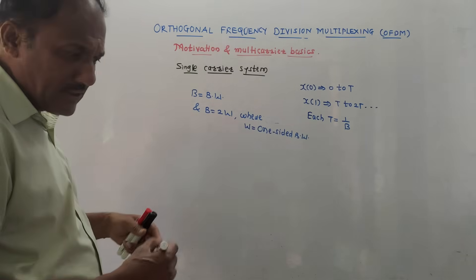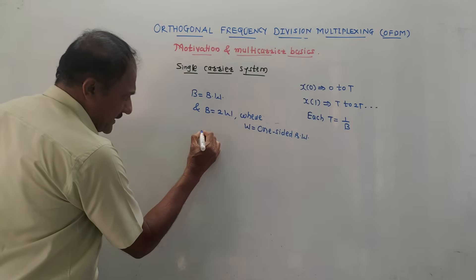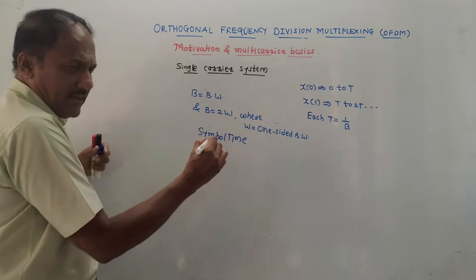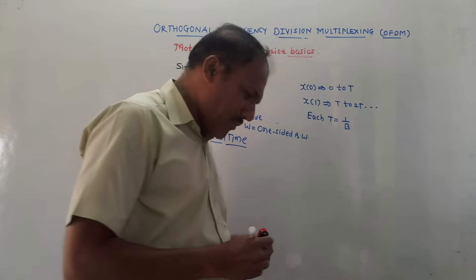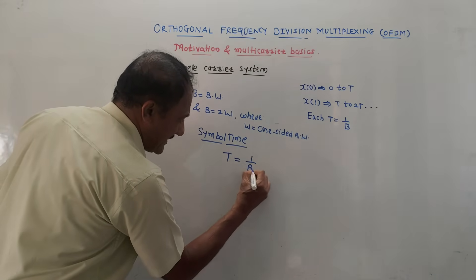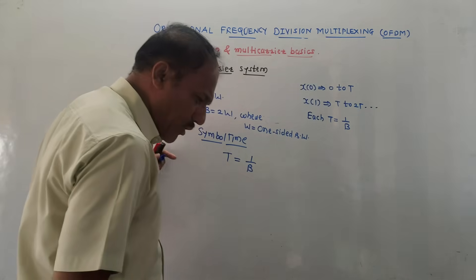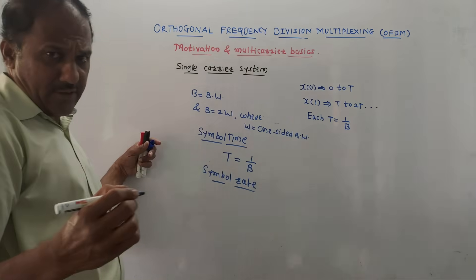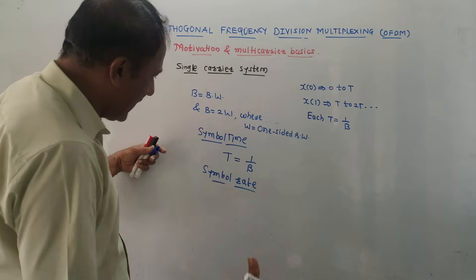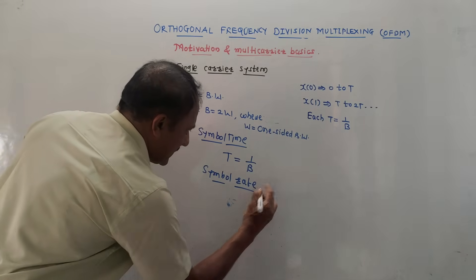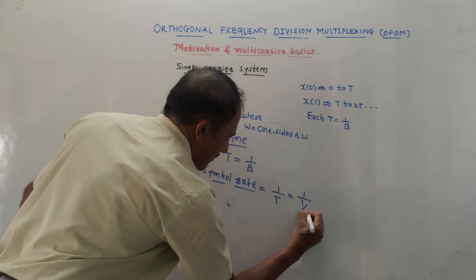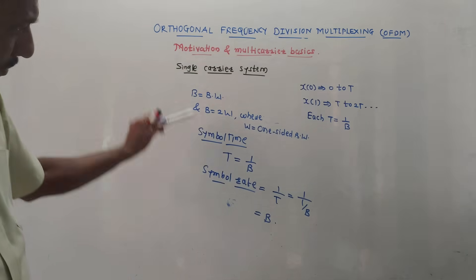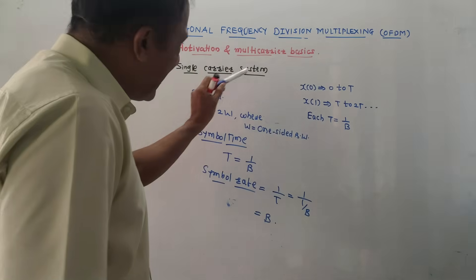Every symbol is transmitted for the entire bandwidth, so a large amount of bandwidth is required because each symbol occupies the full bandwidth. The symbol time t is 1/B, since for the entire bandwidth one symbol is transmitted. Symbol rate is 1/t, which equals 1/(1/B), so symbol rate equals the bandwidth B. This clearly indicates that for the entire bandwidth one symbol is transmitted — this is the single carrier system.